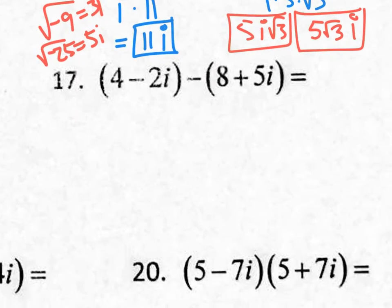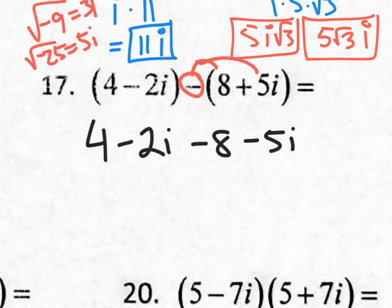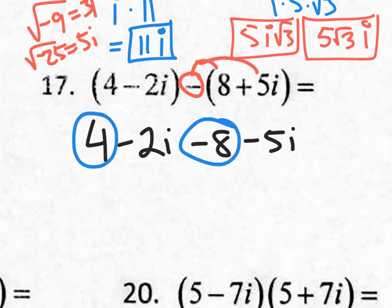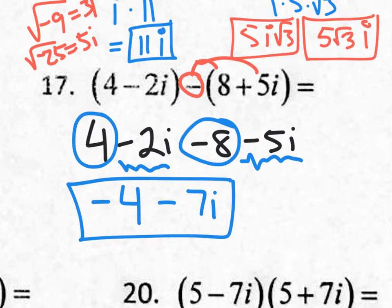Moving on to number 17. This one's really easy — you're not multiplying, you're just combining like terms. Technically, you're distributing the minus sign first, so you really have 4 minus 2i minus 8 minus 5i. Now combining like terms: 4 minus 8 is negative 4, and for the imaginary terms, negative 2i minus 5i is negative 7i — just like negative 2x minus 5x is negative 7x, but in this case it's negative 7i.